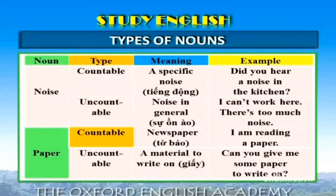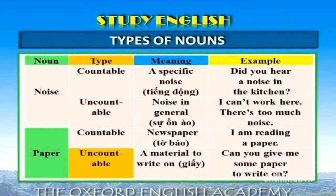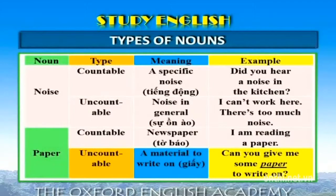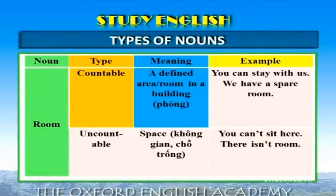Paper là danh từ đếm được khi nó có nghĩa là tờ báo (newspaper). Ví dụ: "I'm reading a paper." Paper là danh từ không đếm được khi nó có nghĩa là giấy - một vật chất (a material to write on). Ví dụ: "Can you give me some paper to write on?" Room là danh từ đếm được khi nó có nghĩa là phòng - a defined area, room in a building. Ví dụ: "You can stay with us. We have a spare room."